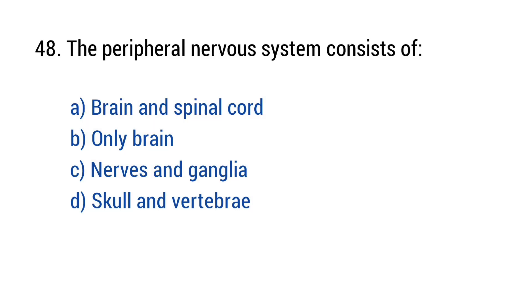Question number forty-eight. The peripheral nervous system consists of? The right answer is option C: Nerves and ganglia.